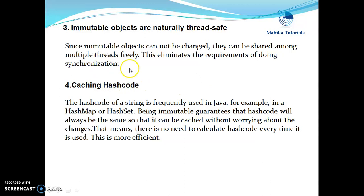Another reason for having string objects as immutable is caching of hash codes. The hash code of a string is frequently used in Java, for example in a HashMap or HashSet. Being immutable guarantees that the hash code will always be the same, so it can be cached without worrying about changes. That means there is no need to calculate the hash code every time it is used, which makes this more efficient. So, for all these reasons, string objects are immutable in Java.